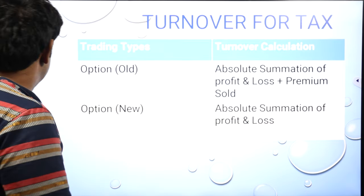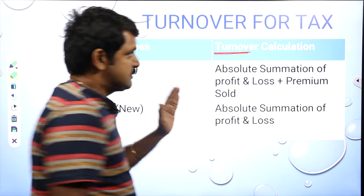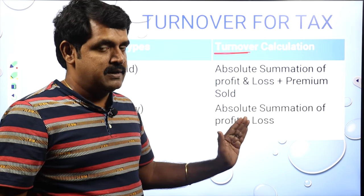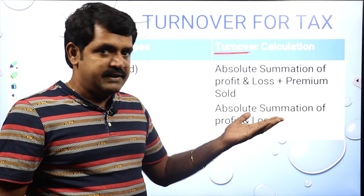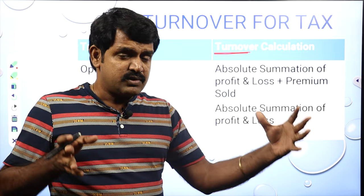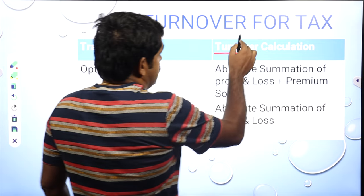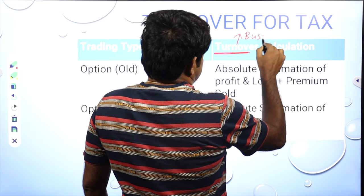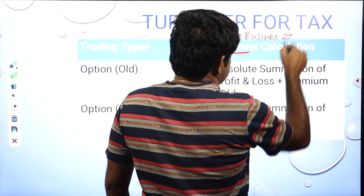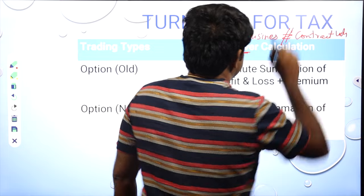First of all, you should understand what turnover means here. This turnover is not the same as your contract turnover when you buy options. The turnover is not equivalent to the contract note value. For tax purposes, this is called business turnover. Business turnover is different from contract value.